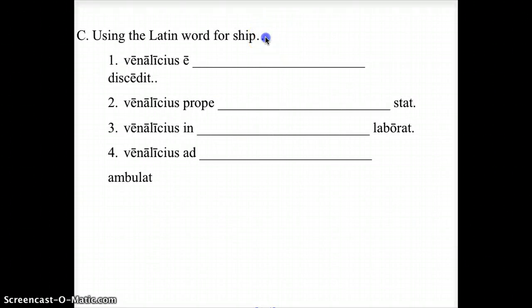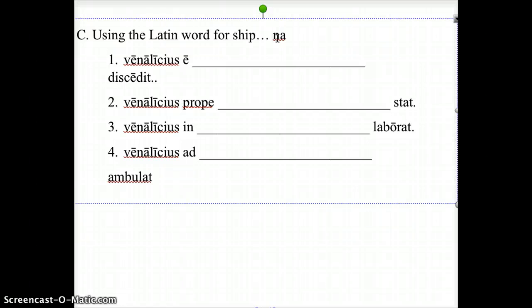And finally, try with the Latin word for ship. It's a third declension noun that is navis. Okay, and again, make sure you're changing the endings based on the preposition. And I know that third declension is sometimes strange with the stem. The stem would be n-a-v, and you just add the endings to that.